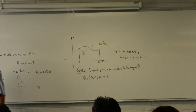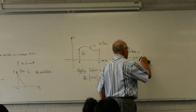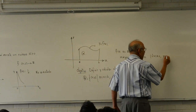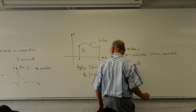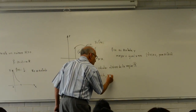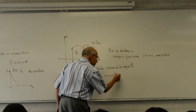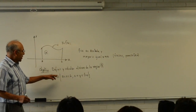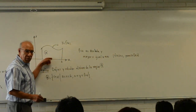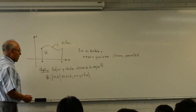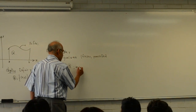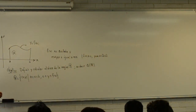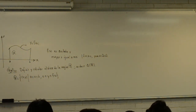En lo sucesivo, ponemos cero menor o igual que Y menor o igual que F de X. Esta es una manera de describir la región R: es el conjunto de parejas ordenadas de números reales tales que X está entre A y B, y Y es mayor o igual a cero y menor o igual que F de X. Vamos a poner A de R para el área de esa región; quiero definir lo que es el área de esa región y decir cómo se calcula.